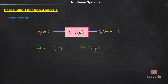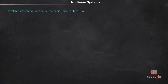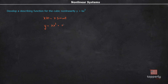Now let's take an example to see how describing functions work. We will develop a describing function for a cubic nonlinearity given by y = kx³. We give an input signal x(t) = x sin(ωt) to the nonlinear element. Therefore the output y will be kx³ = k(x sin(ωt))³ = kx³ sin³(ωt).